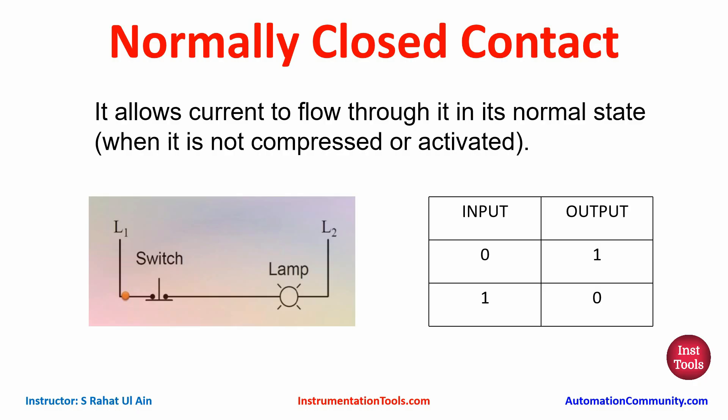Similarly, a normally closed contact allows current to flow through it in its normal state, when it is not activated. That means when the input is not activated, the output gets on. And when the input is turned on, that means when the input is true, the output gets false — the output gets turned off.